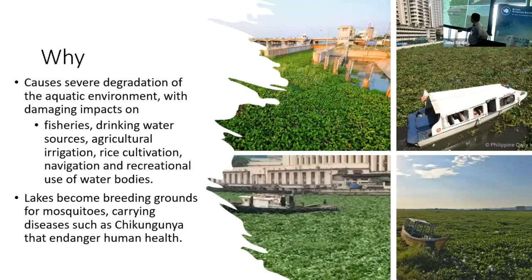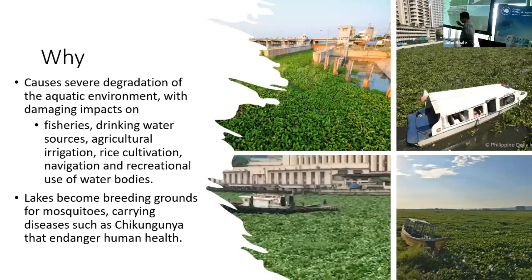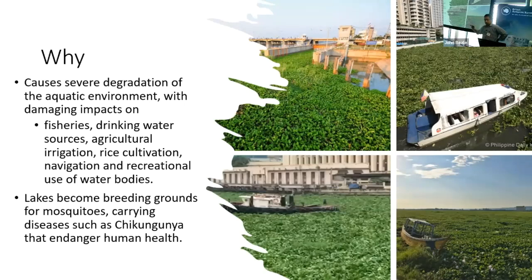These are some photographs captured from all over the world where water hyacinth is a problem — starting from India, Africa, USA, the South Florida area, and some parts of Europe as well, particularly Portugal.